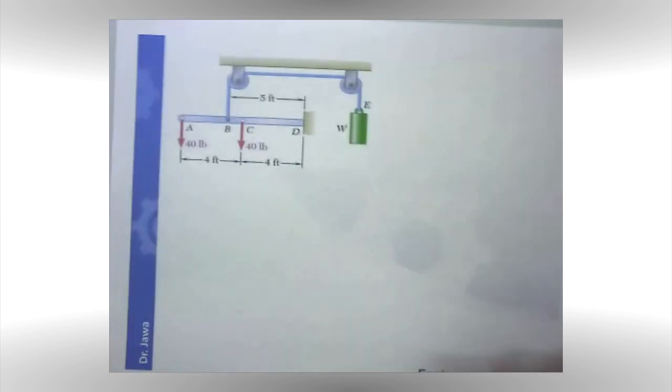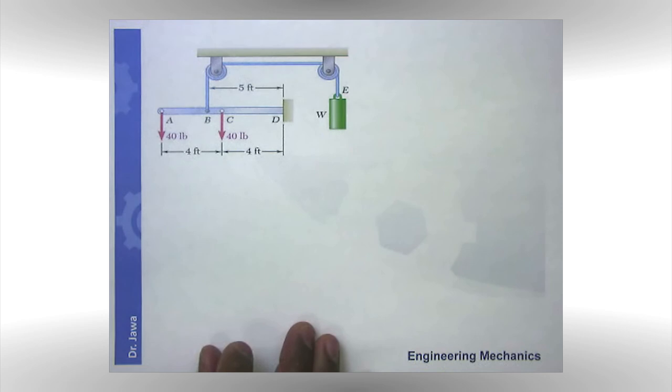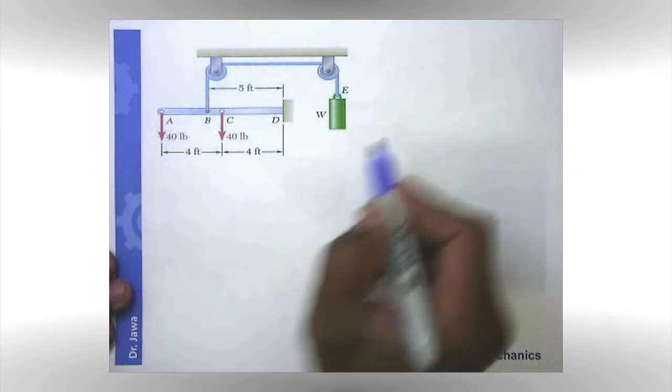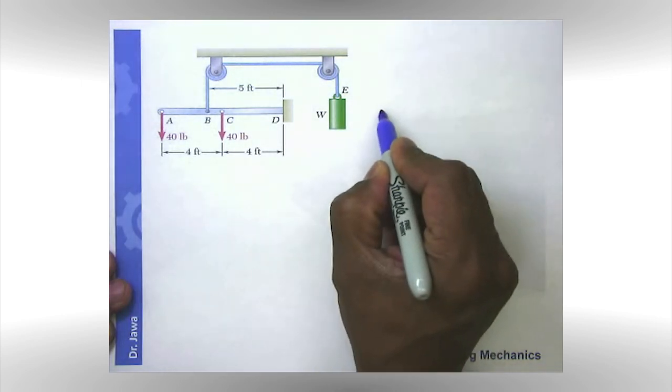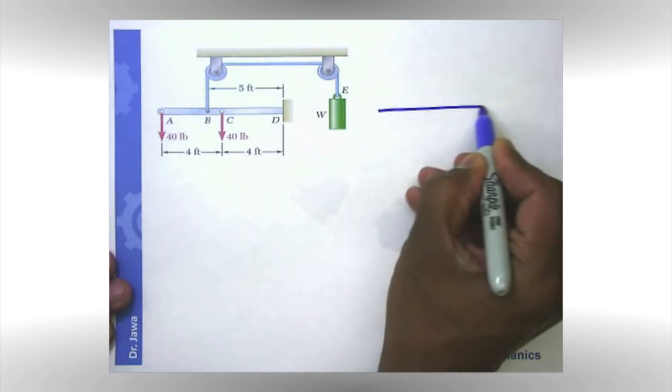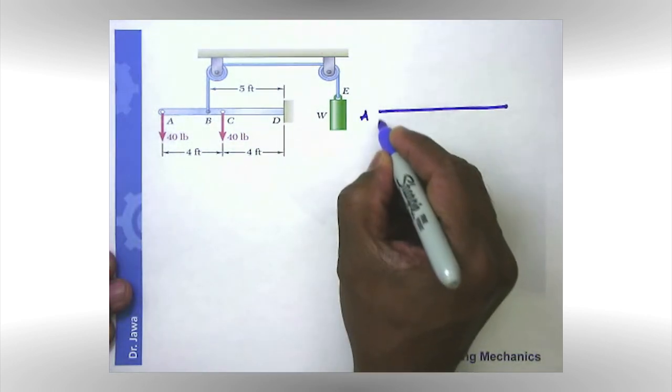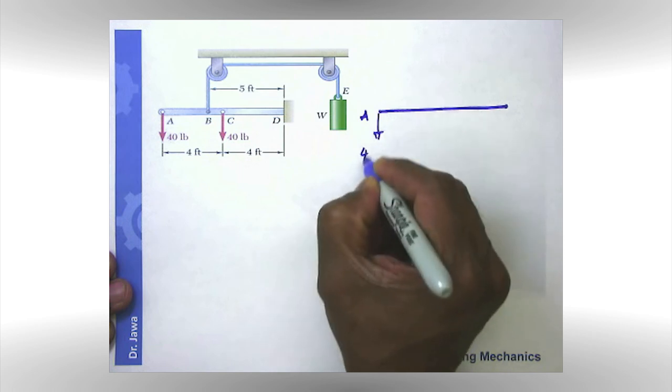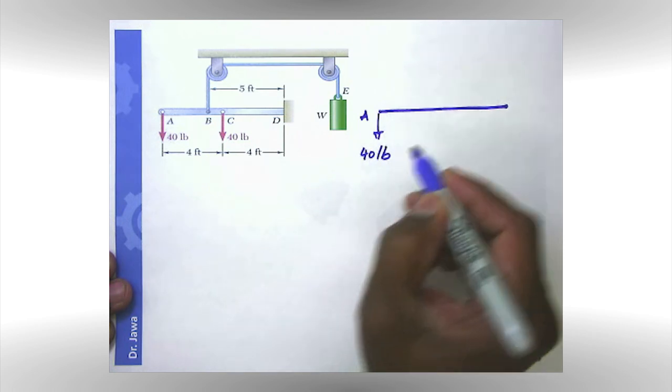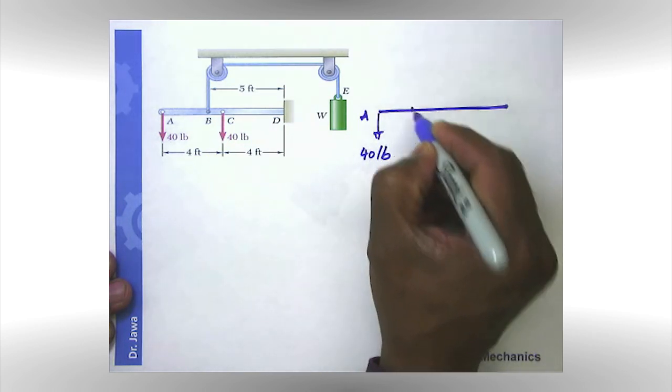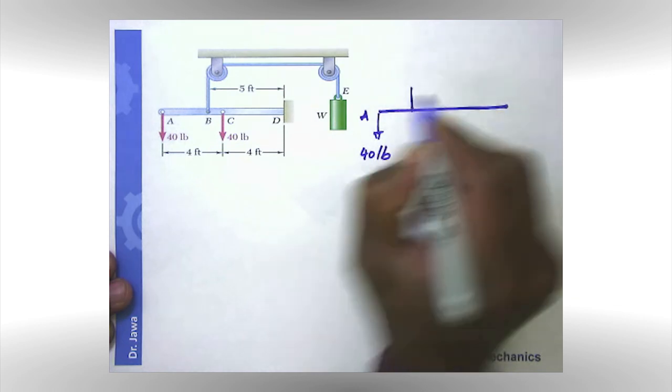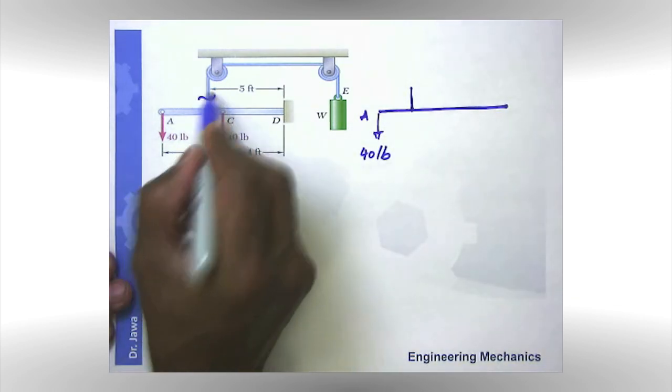So here is the same physical diagram one more time, but it is slightly smaller. Now all I am going to do is draw the free body diagram. In this case, I am going to draw the free body diagram of the beam. This is point A, and here I have a 40 pound load. Then I have point B somewhere here, which is connected to the cable.